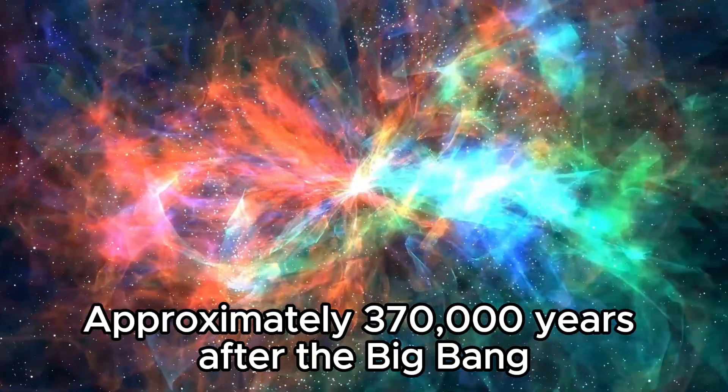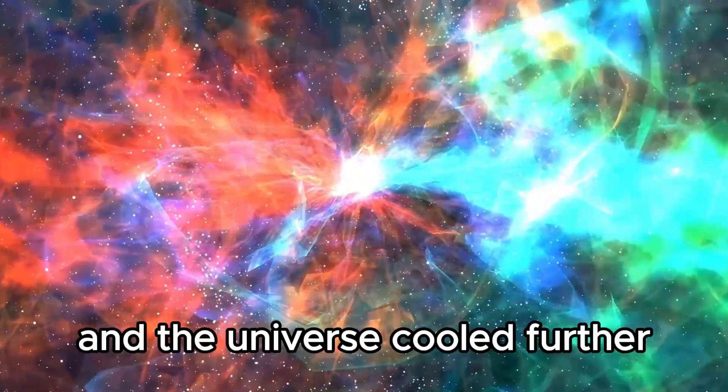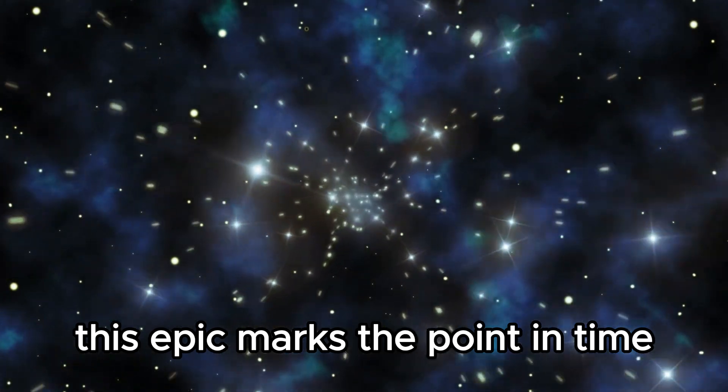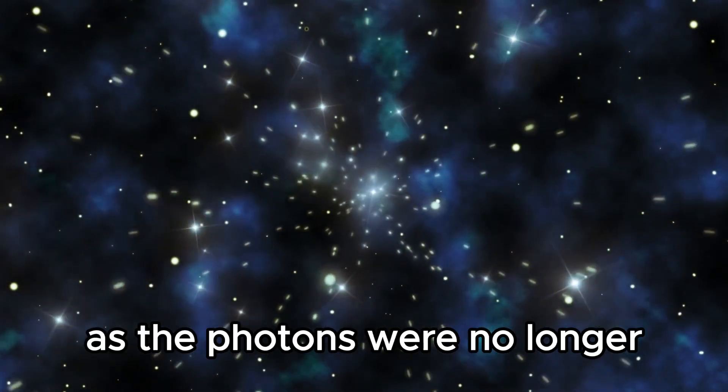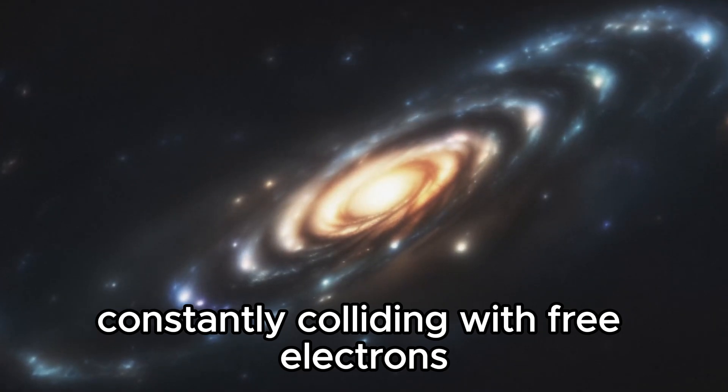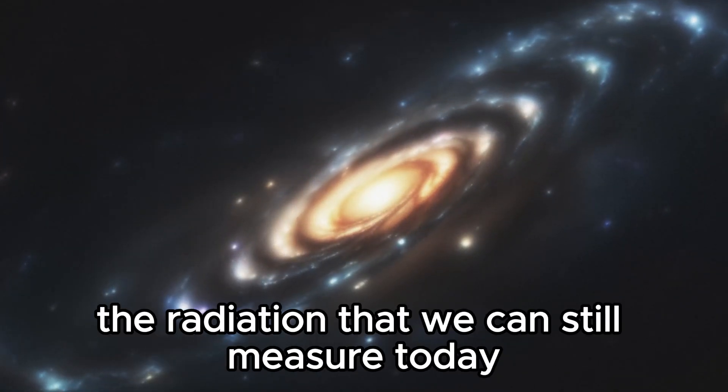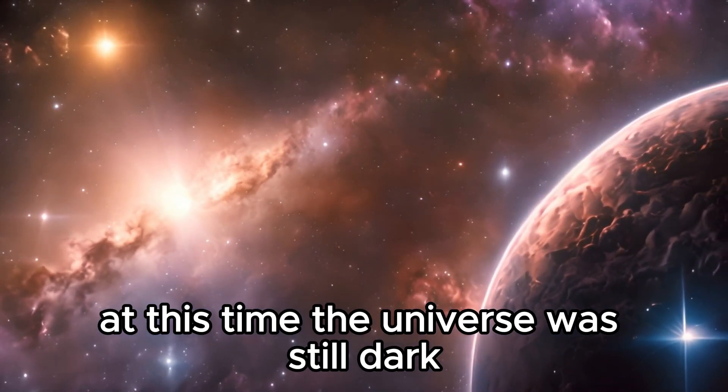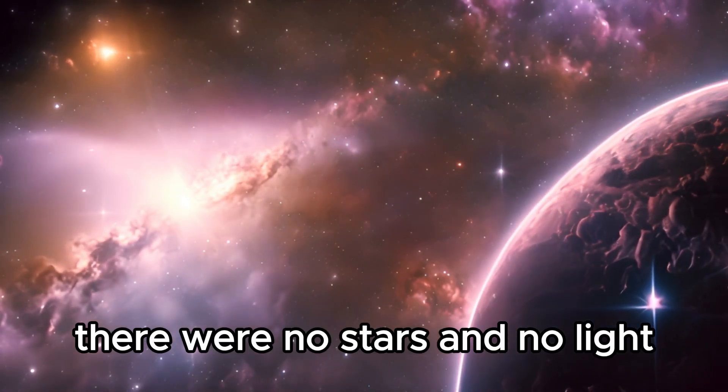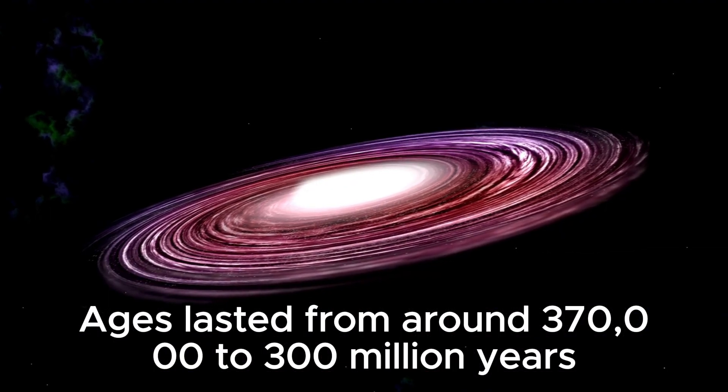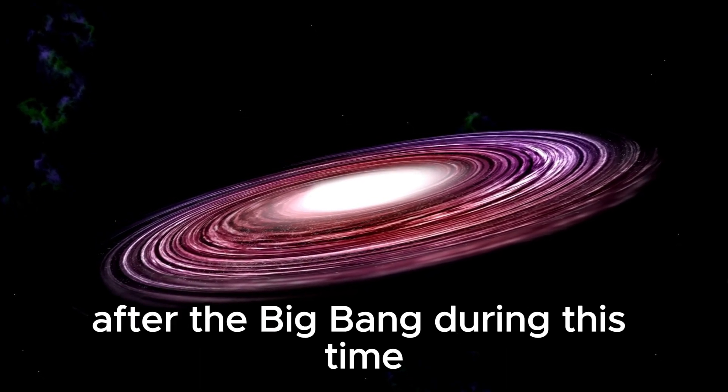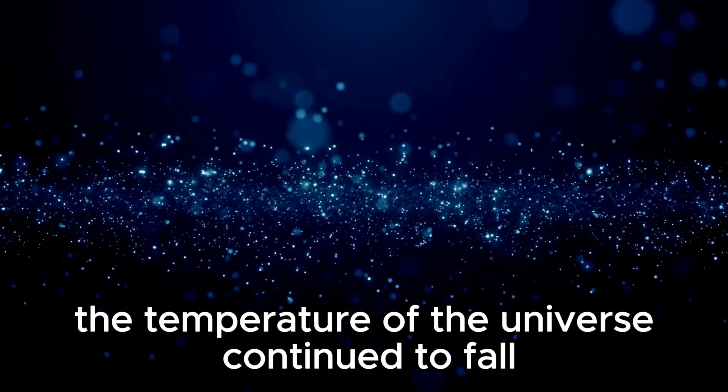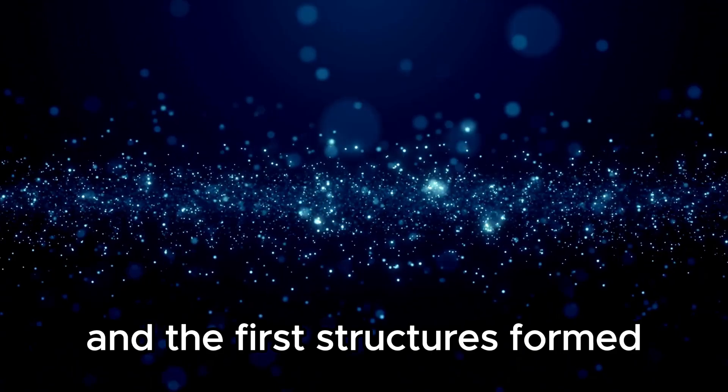Approximately 370,000 years after the Big Bang, the recombination epoch followed, and the universe cooled further, leading to the formation of neutral hydrogen atoms. This epoch marks the point in time when the universe began to thin out a little as the photons were no longer constantly colliding with free electrons. It was precisely this recombination that produced the radiation that we can still measure today as cosmic background radiation. At this time, the universe was still dark. There were no stars and no light. The Dark Ages lasted from around 370,000 to 300 million years after the Big Bang. During this time, the universe was mainly filled with neutral hydrogen and helium. The temperature of the universe continued to fall, and the first structures formed under the effect of gravity.